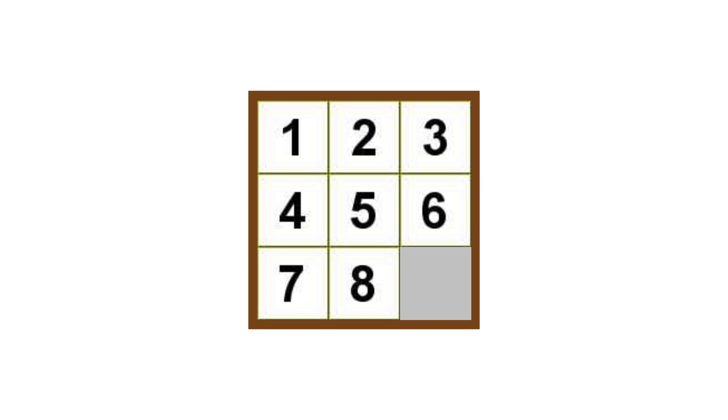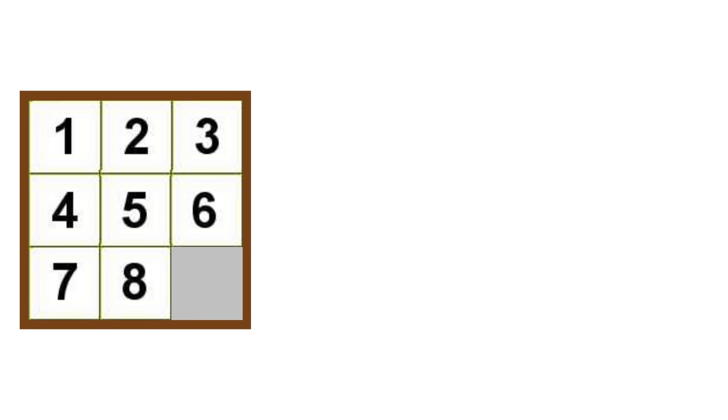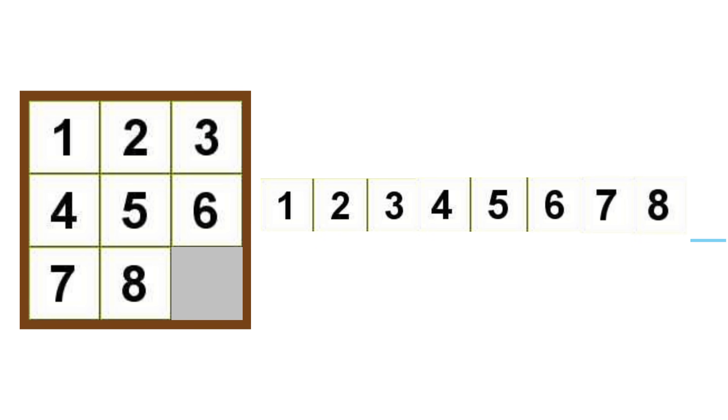Again, we're trying to get the tiles in numerical order from left to right and going down, as if we were reading a book. So what we can do is lay the tiles out sideways, with the blank spot being at the end, and just look at them with a different perspective. But we're curious whether this is possible to solve when the last two numbers are switched.